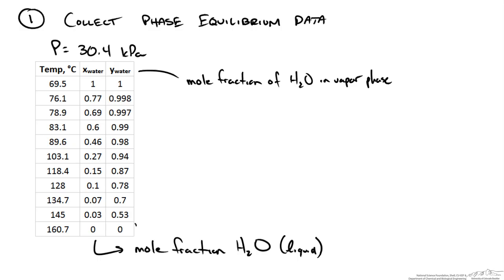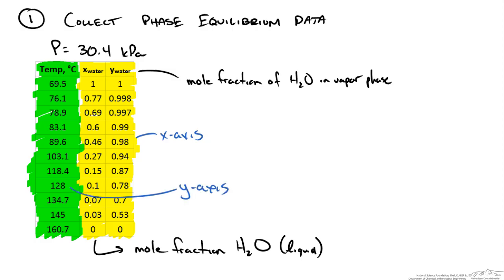So outside of these two temperatures, 69.5 and 160.7, we won't have vapor-liquid equilibrium. So now we have this data, we can create a T-xy phase diagram. Basically what we do is we are going to plot our mole fractions on the x-axis and we are going to plot our temperature on the y-axis. And when we do, we get the following diagram.